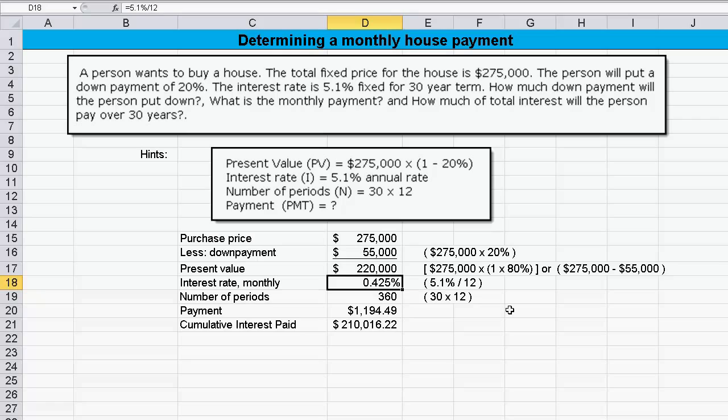Now, the interest rate, you've got to take the annual interest rate and divide it by 12. So, 5.1% divided by 12 gets you the interest rate. The number of periods is 30 years with 12 months per year. That gives you 360.